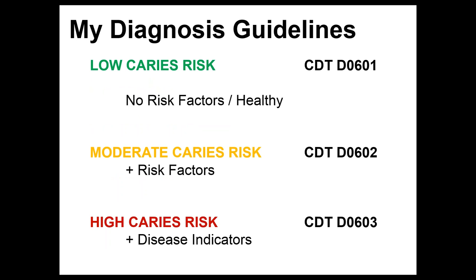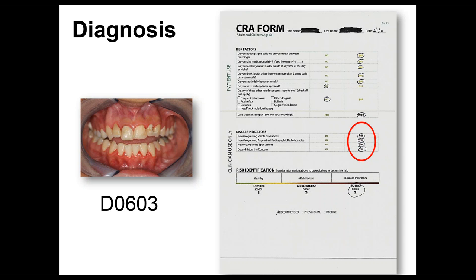My diagnostic guidelines are simple: if you have only green answers on the risk assessment form, you are low risk — no risk factors, healthy, CDT D0601 category. If you have at least one yellow answer, you're moderate risk. If you have at least one red answer, you're high risk. Green dot means healthy, yellow means moderate risk, red means high risk. I don't know how to make it simpler than that. I've had educators say it's too complicated, and I think — really? It doesn't get simpler than that.